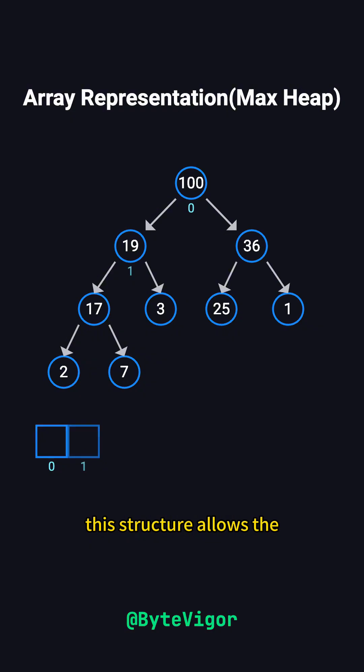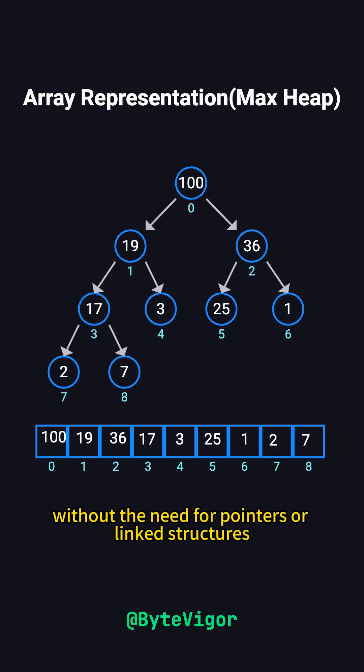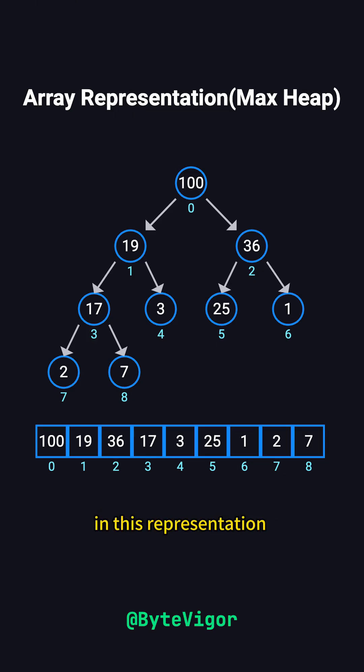This structure allows the entire heap to be efficiently represented in a single array, without the need for pointers or linked structures. In this representation, the root node, 100, is at index 0. The second layer, containing 19 and 36, is stored at indices 1 and 2. Subsequent levels continue to fill in order.